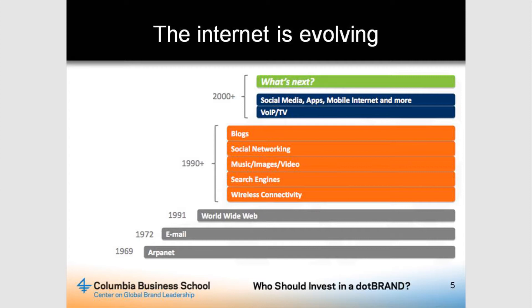Country codes — such as .au, .uk, .jp, and .de — operate separately, and the first round of competition introduced a number of new gTLDs in 2000.